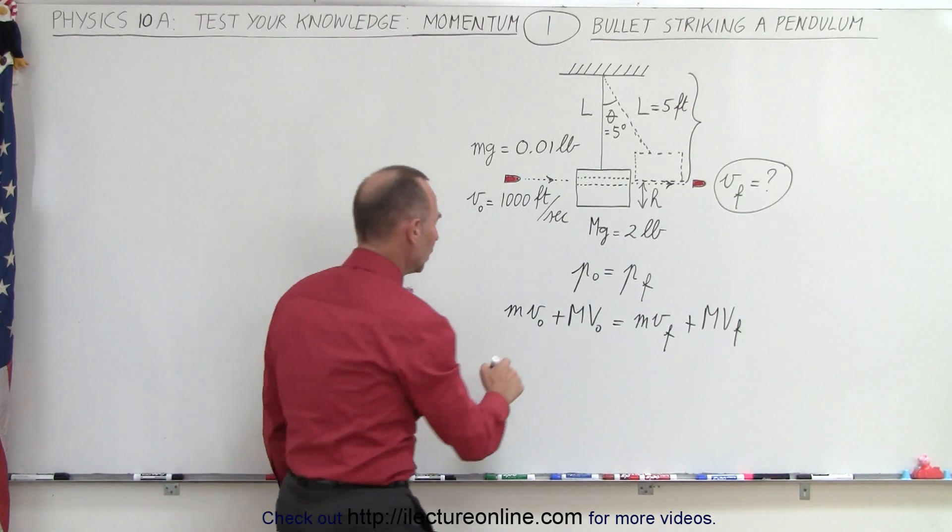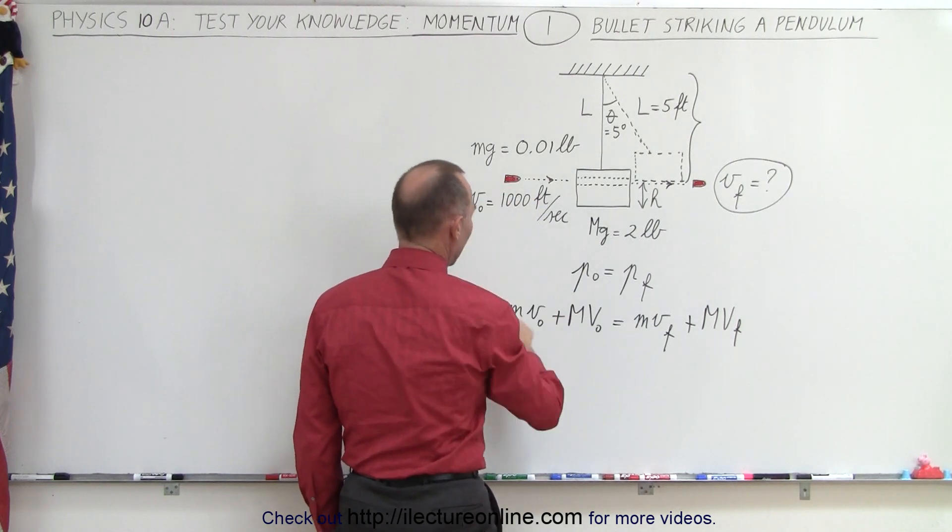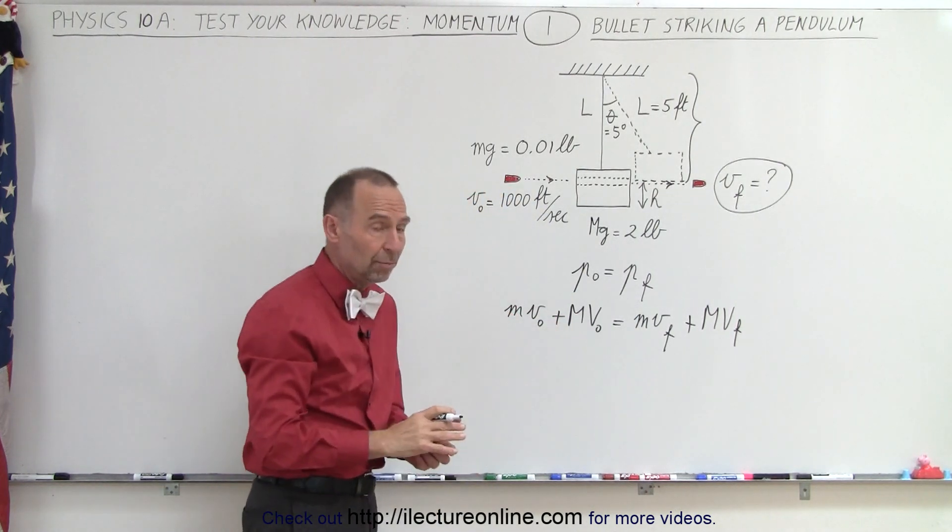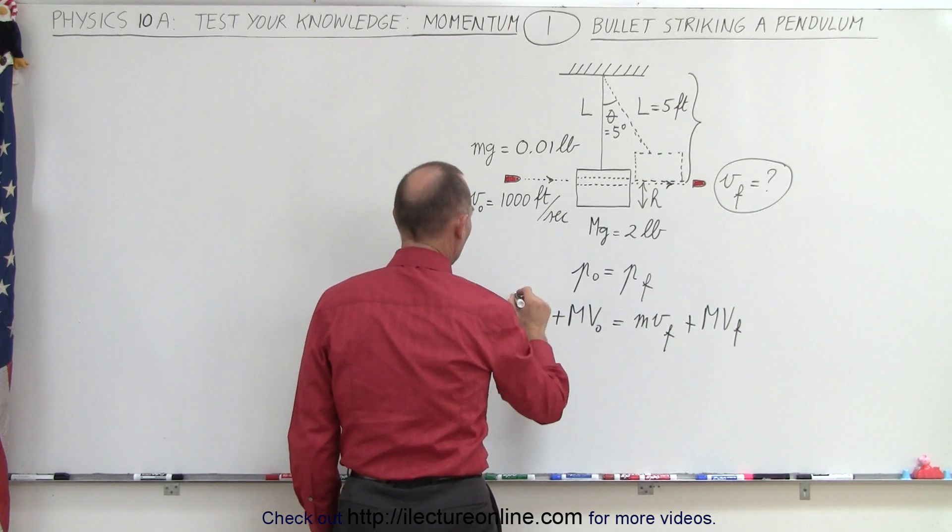We can use mg instead of m because we can multiply everything by g. That works out just fine since we're using imperial units.